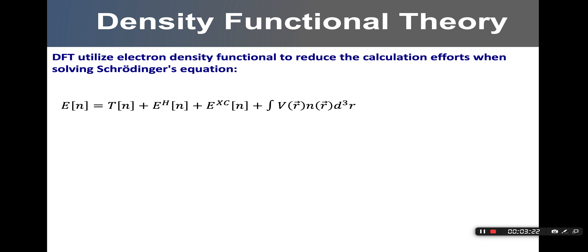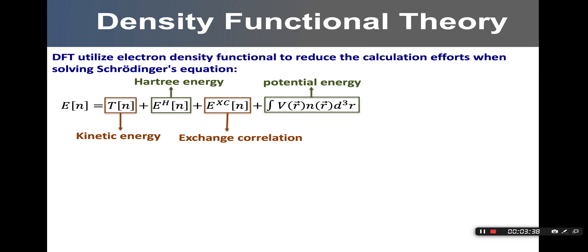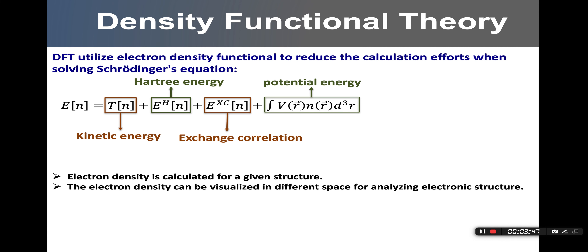Let's first review the Kohn-Sham equation, which is the master equation we solve when running any DFT code. If you look at these equations, you'll realize that the first variable we obtain after finishing the self-consistent loop is actually the electron density, which is N in this equation. So electronic structure is actually the first solution we obtain before we get the total energy of the system. Different electronic structures differ only in the ways they represent the electronic density.